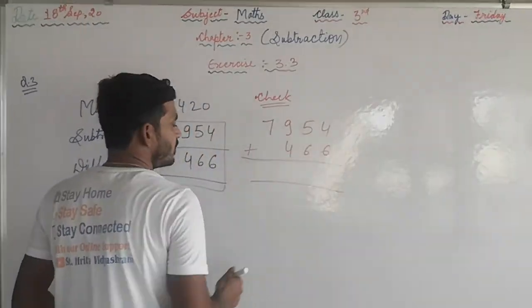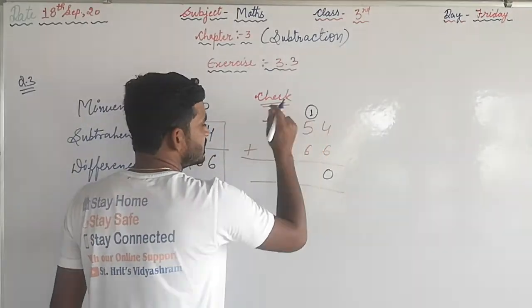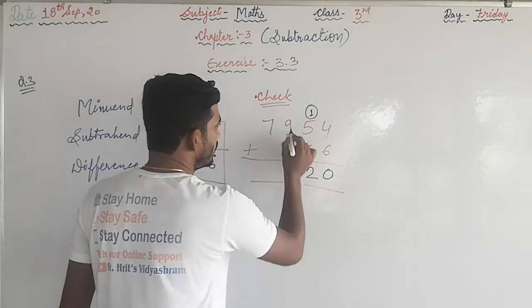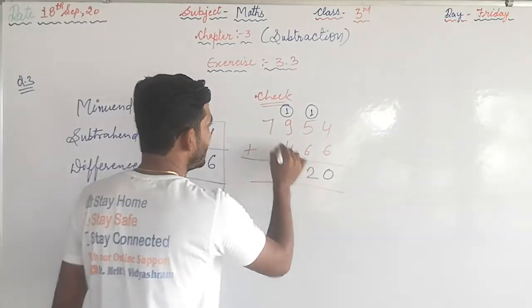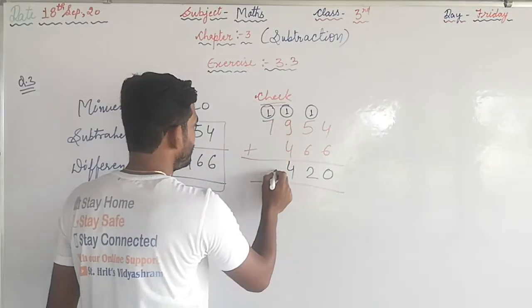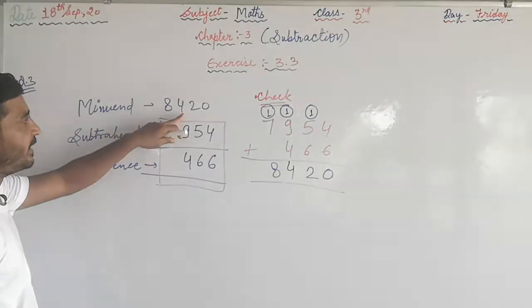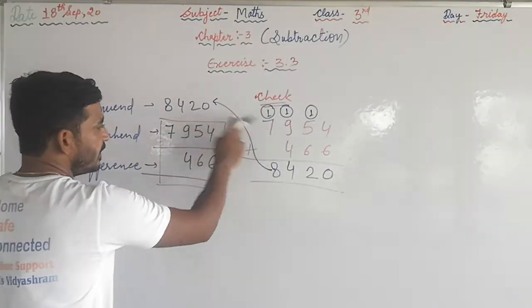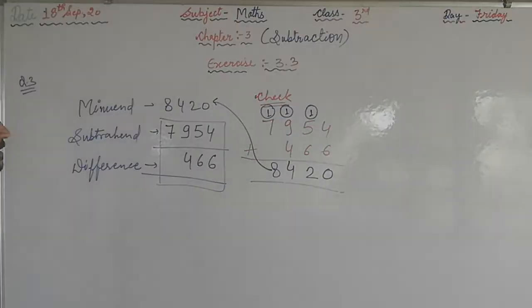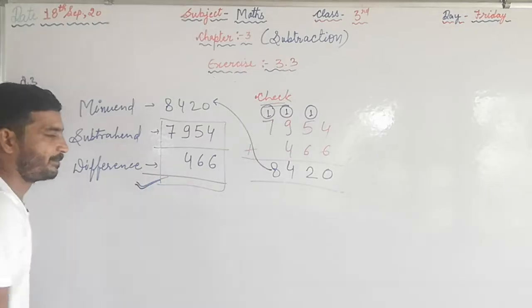6 plus 4, 10, write 0 carry 1. 5 plus 1, 6, plus 6, 12, write 2 carry 1. 9 plus 1, 10, plus 4, 14, write 4 carry 1. 7 plus 1, 8. 8420. Here the minuend is also 8420. Both the minuend and the result are the same. Both things are the same. That means your answer is right.